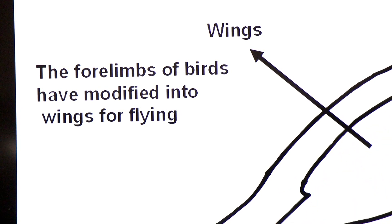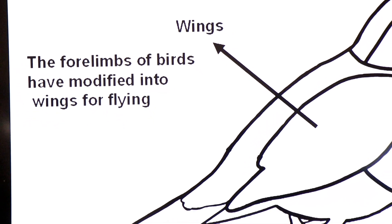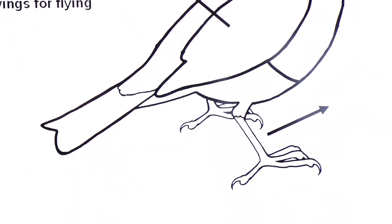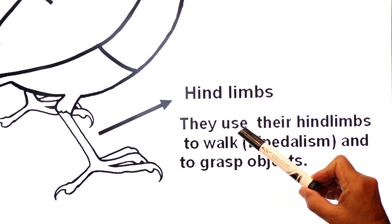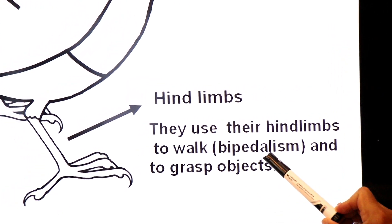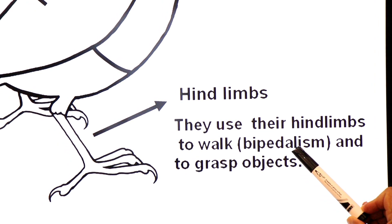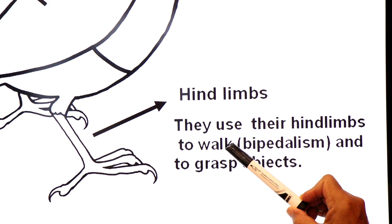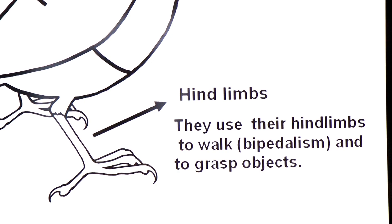Birds use their hind limbs for bipedal locomotion, which takes place on two feet. They use their hind limbs to walk — bipedalism — and also to grasp other objects.